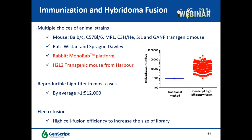We observed an average fusion efficiency of one hybridoma per 200 to 2,000 B cells, resulting in 20,000 to 50,000 hybridomas per animal. Compared with traditional chemical PEG fusion, which usually results in 1,000 to 2,000 hybridomas, our high-efficiency electrofusion generated an average of 50,000 hybridomas per screening.